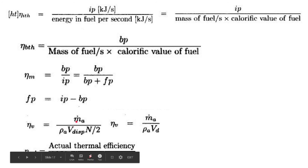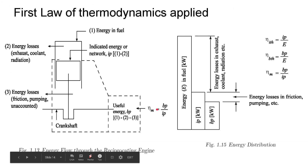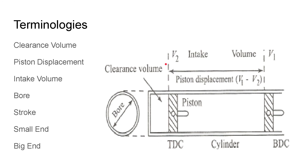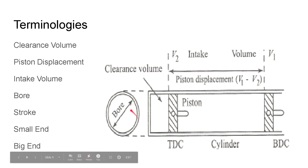Volumetric efficiency eta_V is defined as the mass flow rate of air divided by the density of air times the displacement volume times N/2: eta_V = m_dot_a / (rho_a × V_d × N/2). The displacement volume V_d is the volume displaced by the piston — stroke length multiplied by the bore area.